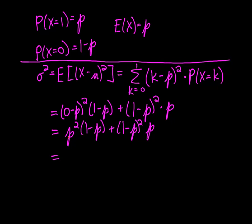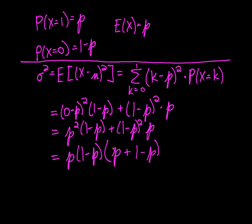To simplify this, we factor out a p and a 1 minus p from both terms — we can only factor out one p and one 1 minus p since each appears at most once per term. Pulling out p and 1 minus p from the first term leaves just p. Adding the second term, pulling out p and 1 minus p from 1 minus p squared leaves one more 1 minus p. This whole expression simplifies to 1.